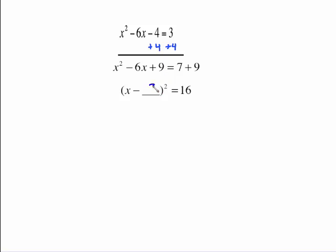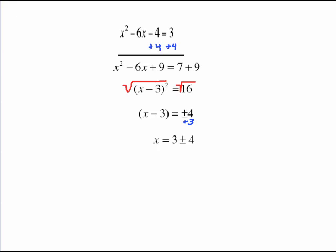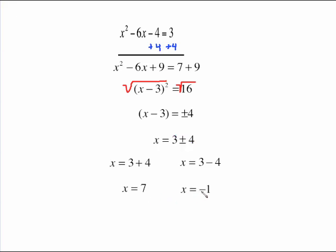What number goes in the squared quantity? It's 3, because we squared 3 to get 9. So we have x minus 3 squared equals 16. Take the square root of both sides: square root of x minus 3 squared is x minus 3, and square root of 16 is plus or minus 4. Add 3 to both sides to get 3 plus or minus 4. The high road uses the plus sign: x equals 3 plus 4 equals 7. The low road uses the minus sign: x equals 3 minus 4 equals negative 1. You get two solutions because this is x squared.